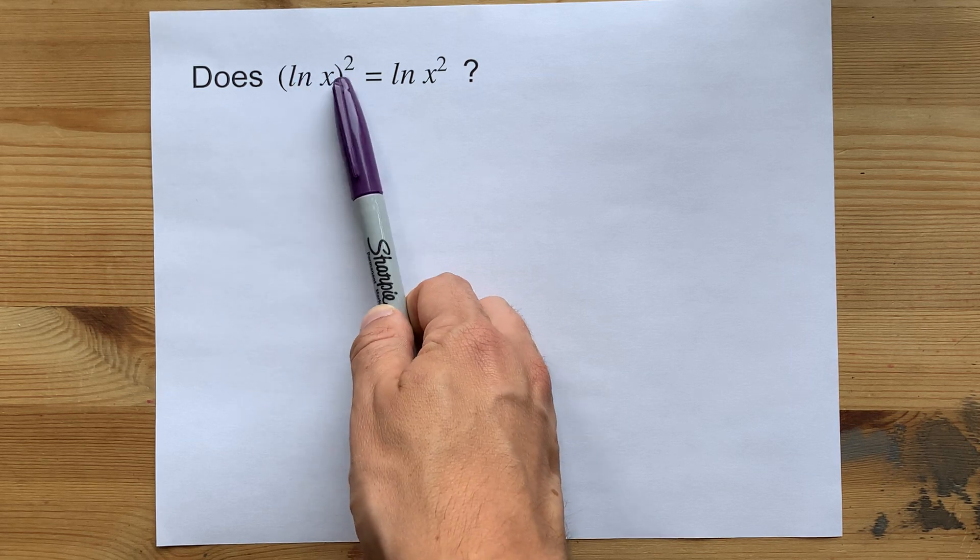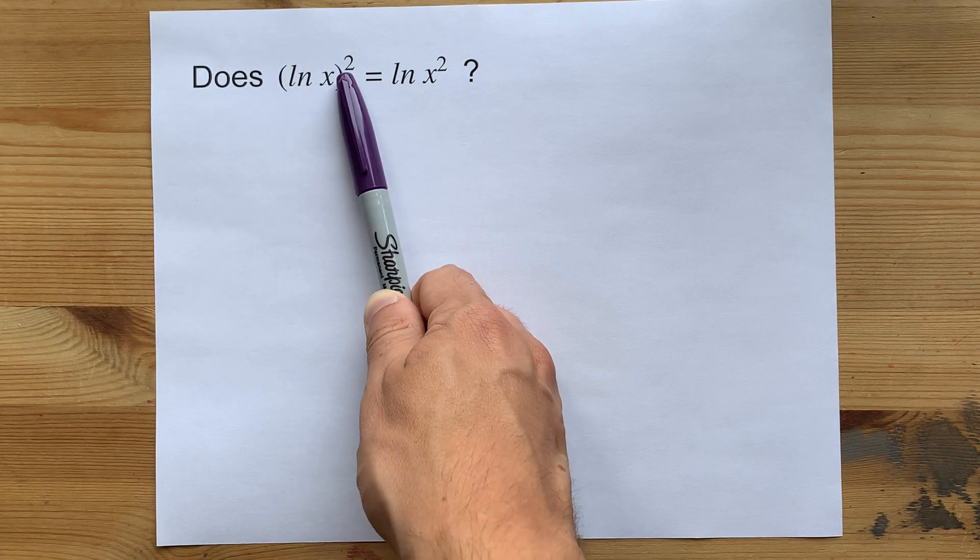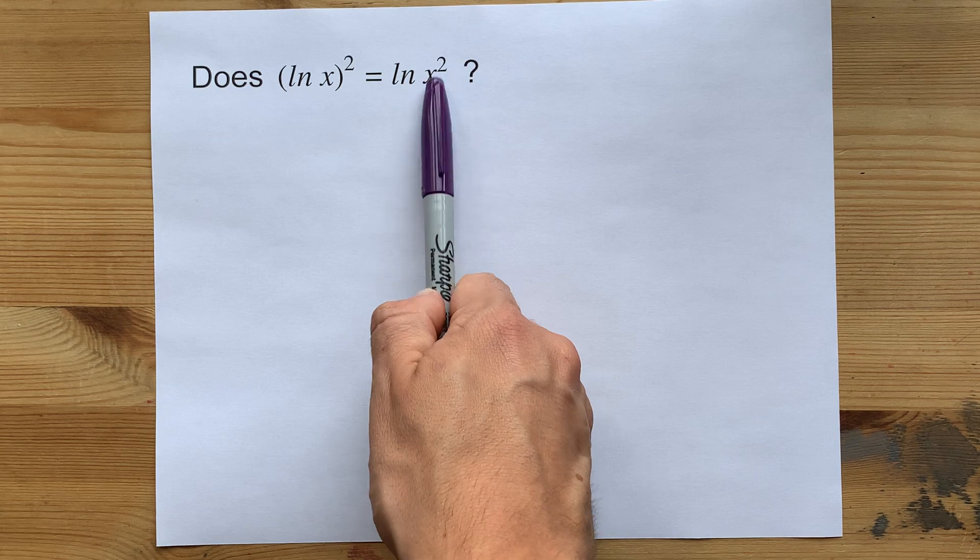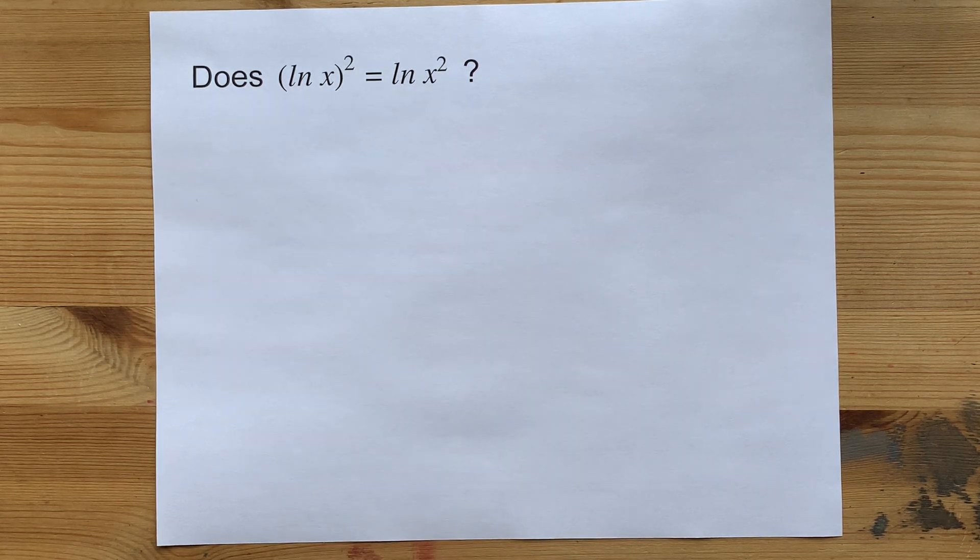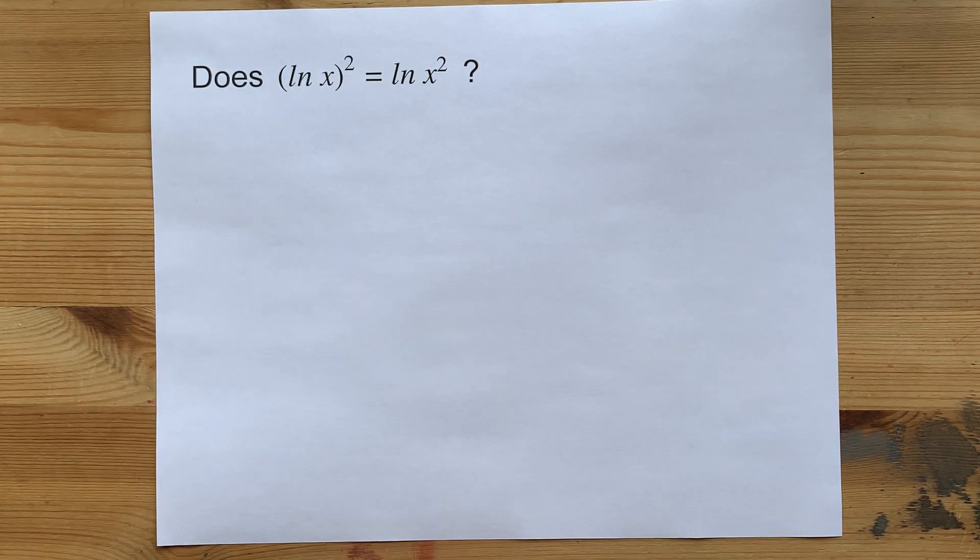Note that here you're taking the natural logarithm of x, then squaring it. Here you're squaring x, then taking the natural logarithm. Does it matter what order those happen in?